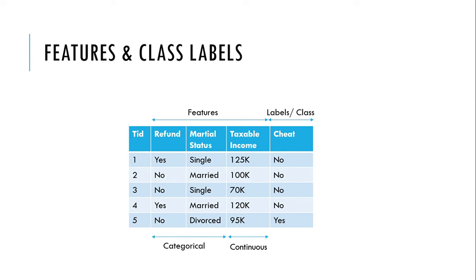Within feature columns there are two different categories: categorical columns and continuous columns. Continuous columns contain numerical data — for example, taxable income, stock price, and salary are all numerical and are called continuous columns. Categorical columns contain data divided into categories — for example, marital status is divided into three categories: single, married, and divorced. That is why it is called categorical data.